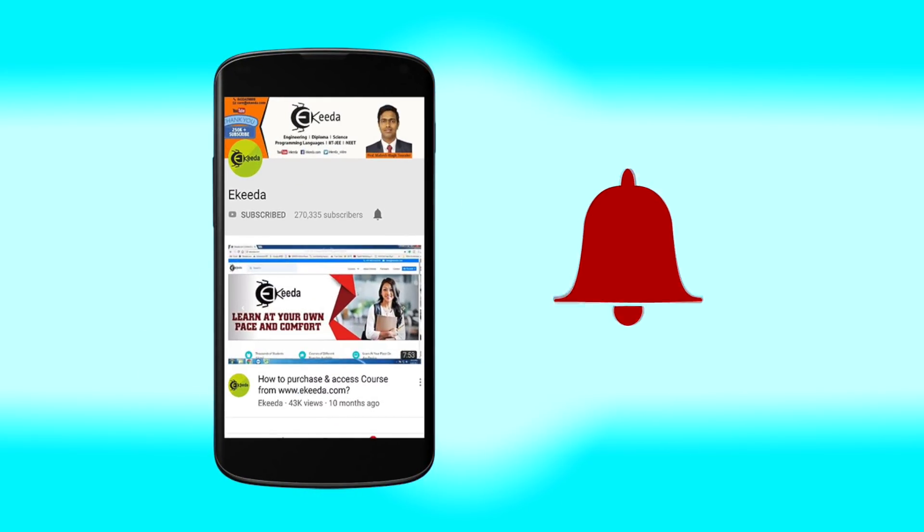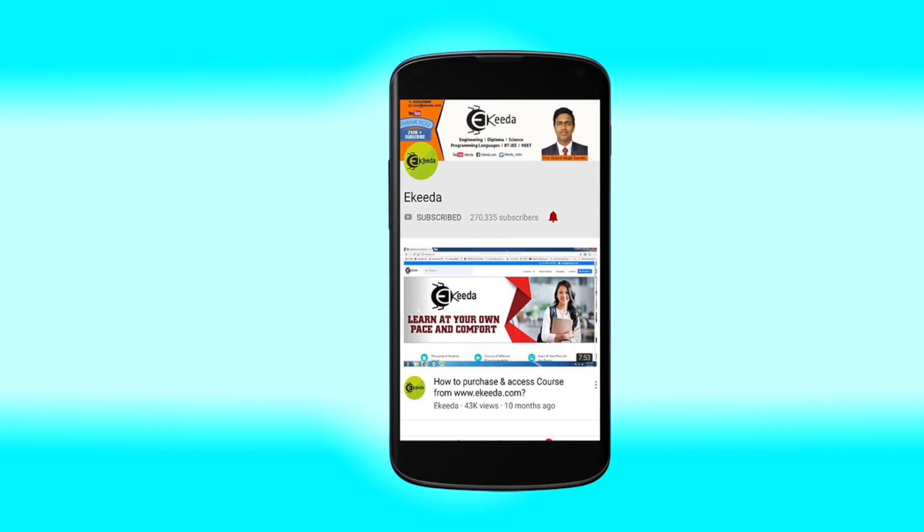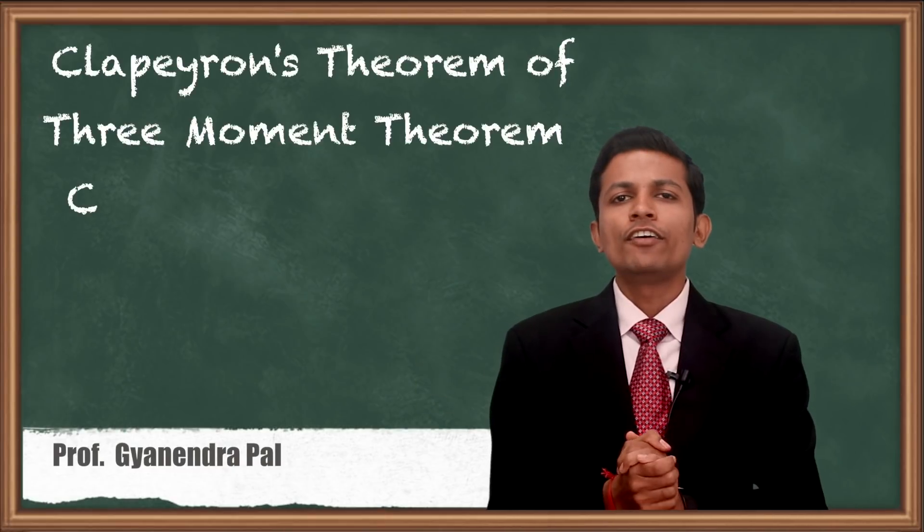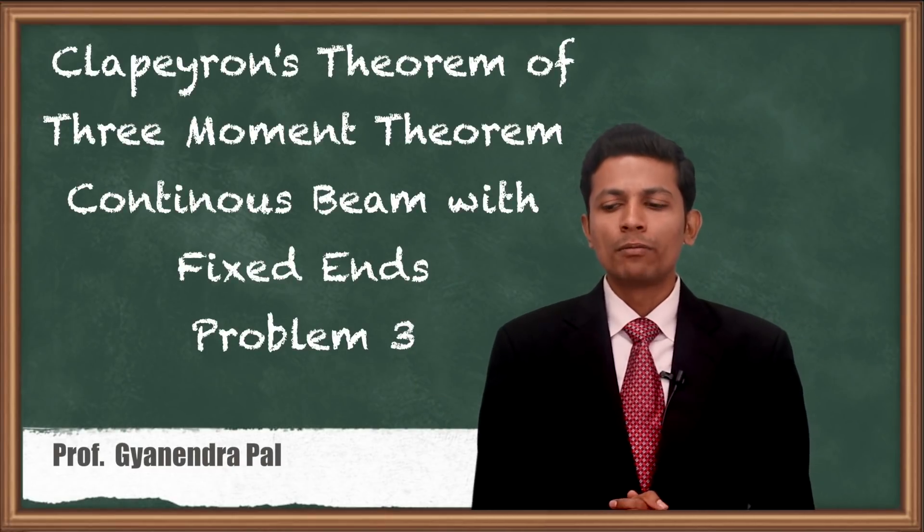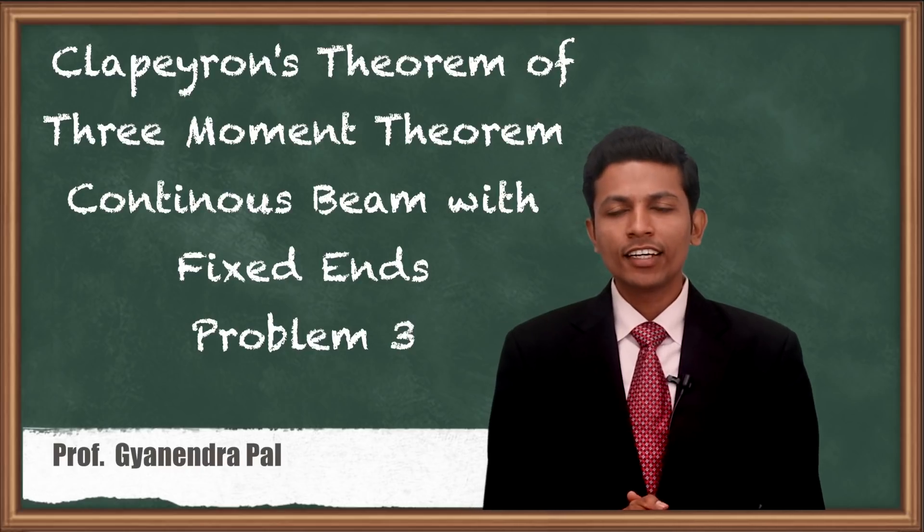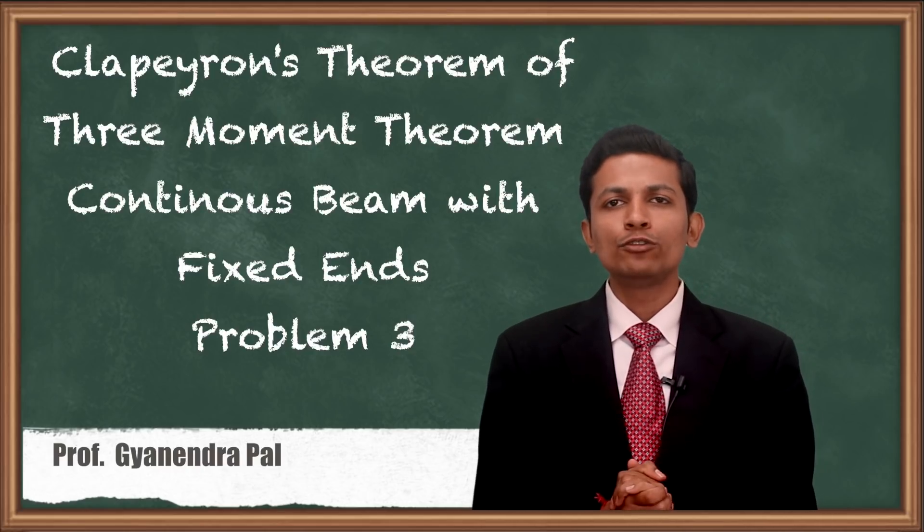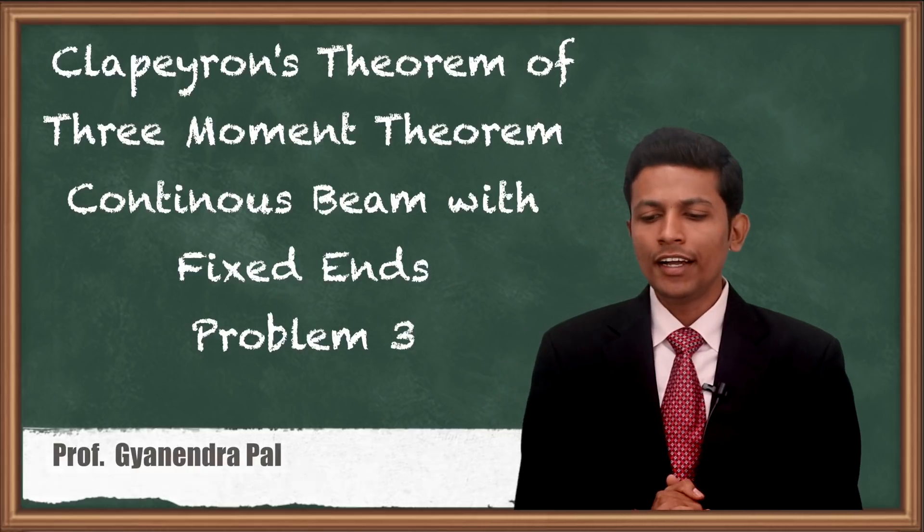Click the bell icon to get latest videos from Ikeda. Hello friends, today we are taking another problem on Clapeyron's 3-moment theorem, problem number 3. In that we are seeing continuous beam with fixed end. Let's see in details.